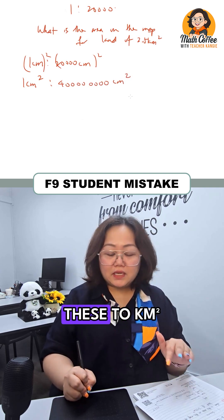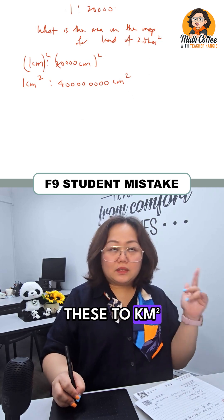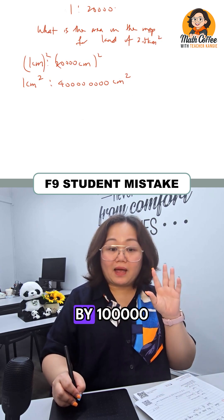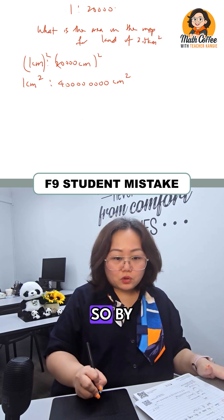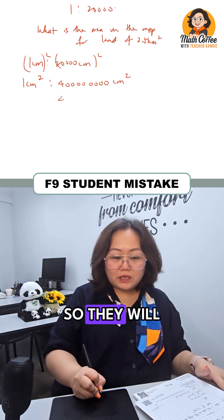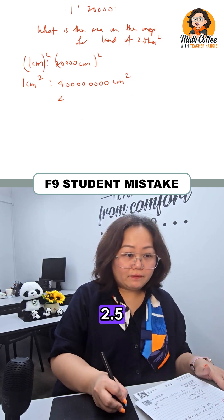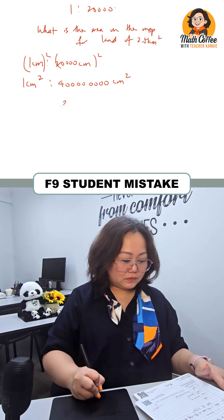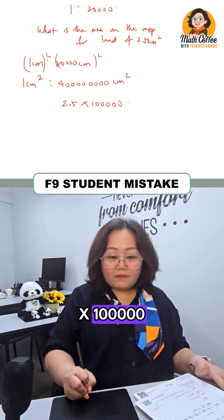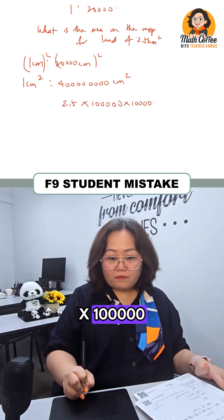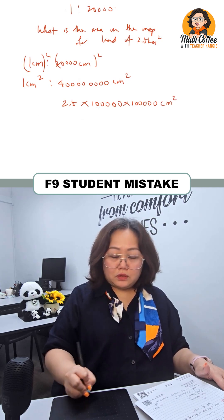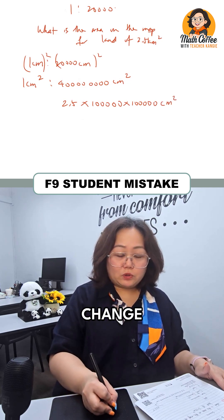Then they will convert these to km squared. cm squared convert to km, cm to km is divided by 100,000. So by changing it to km squared, they're going to do it 2 times. So they will take 2.5 times 100,000 times 100,000 and change this to km squared.